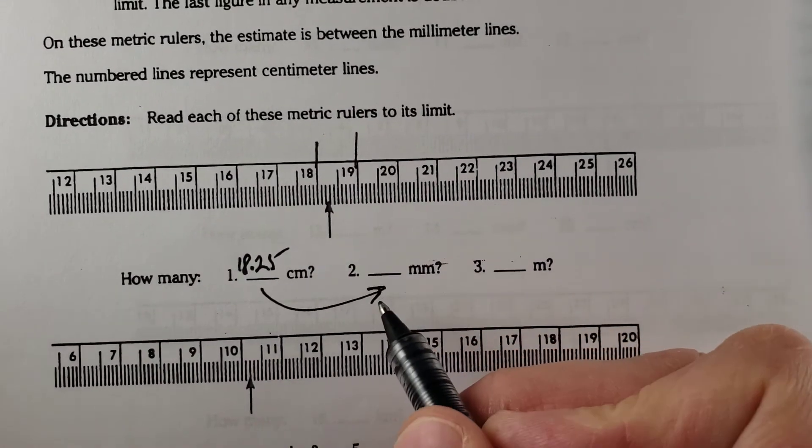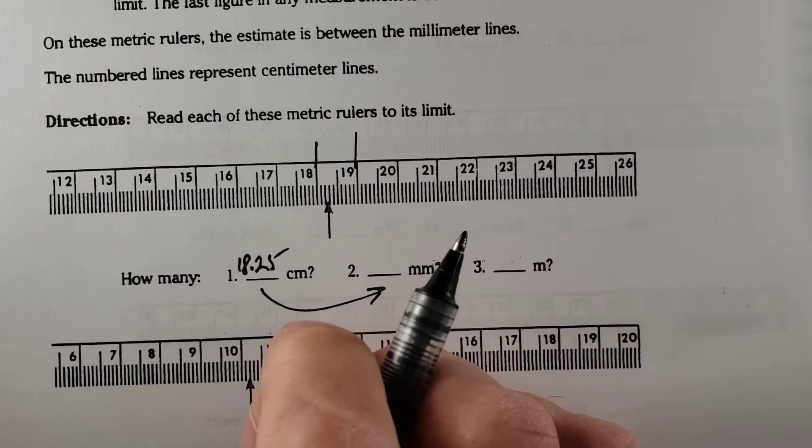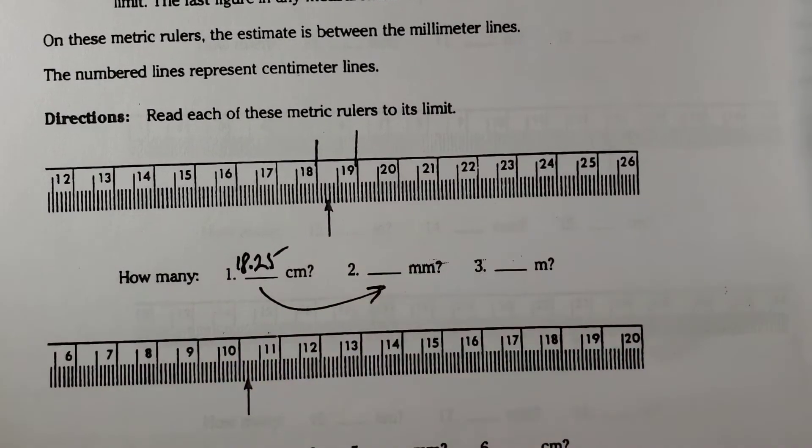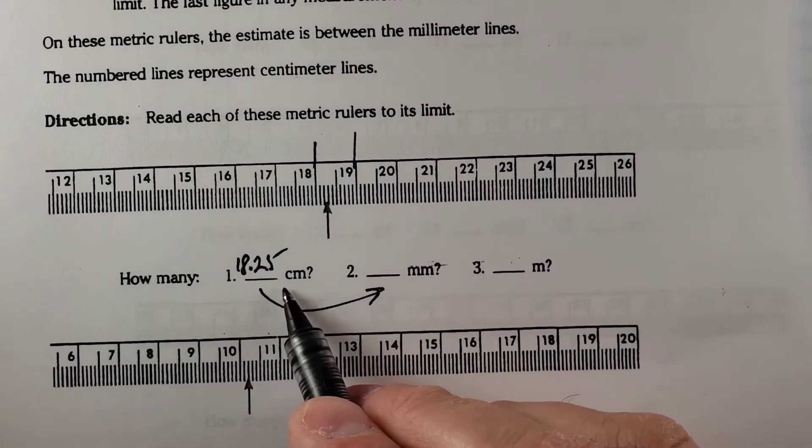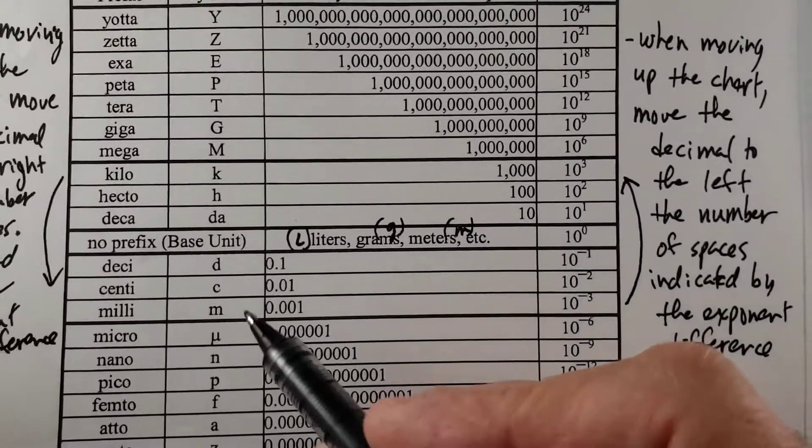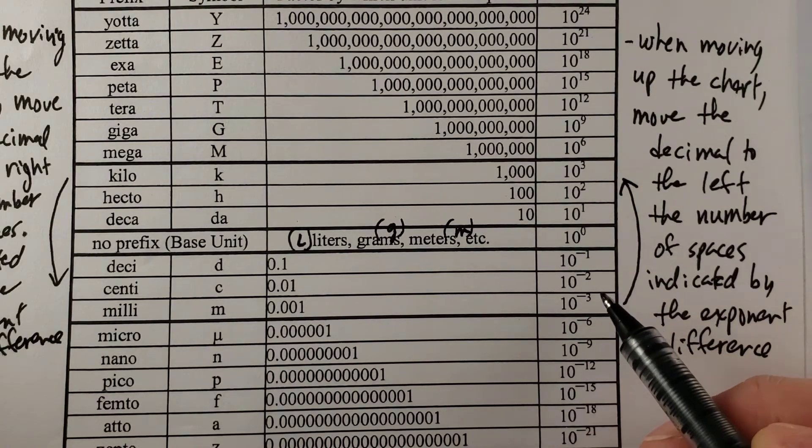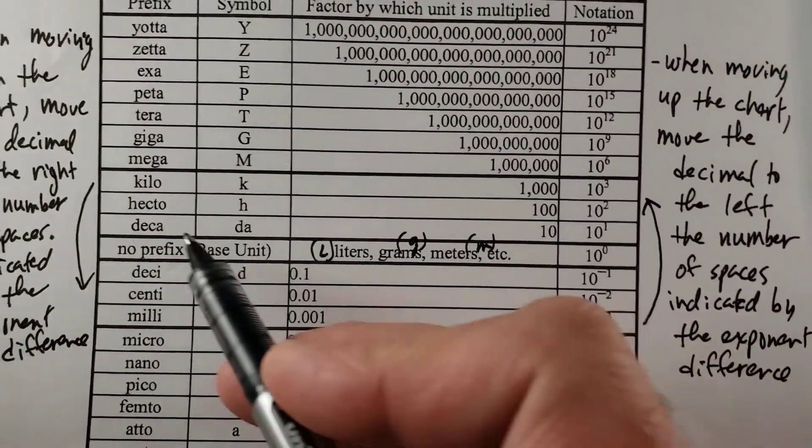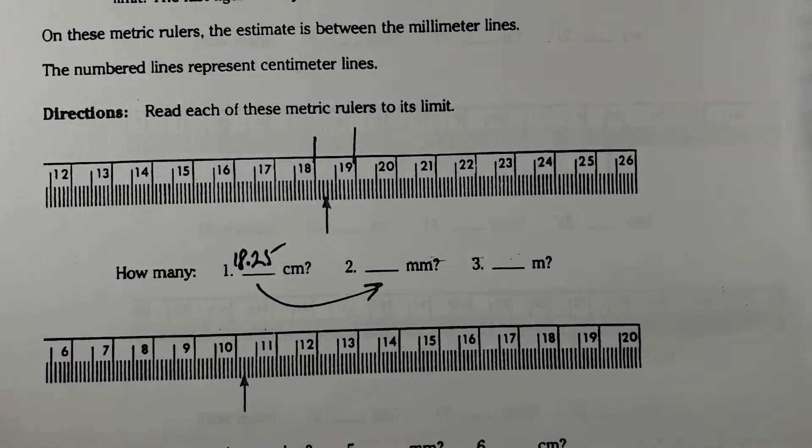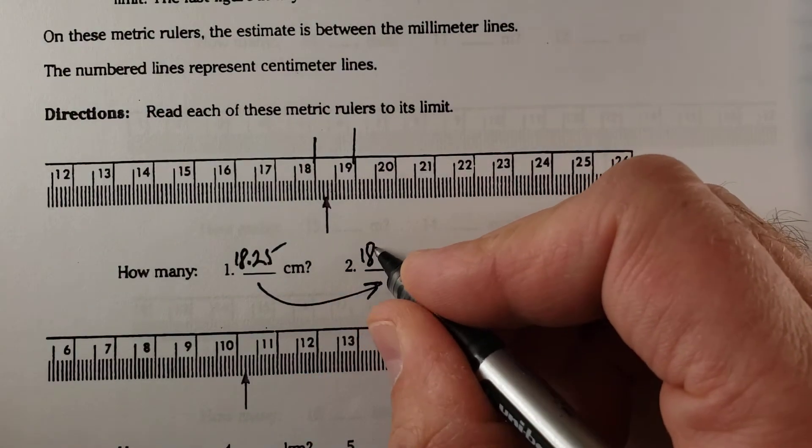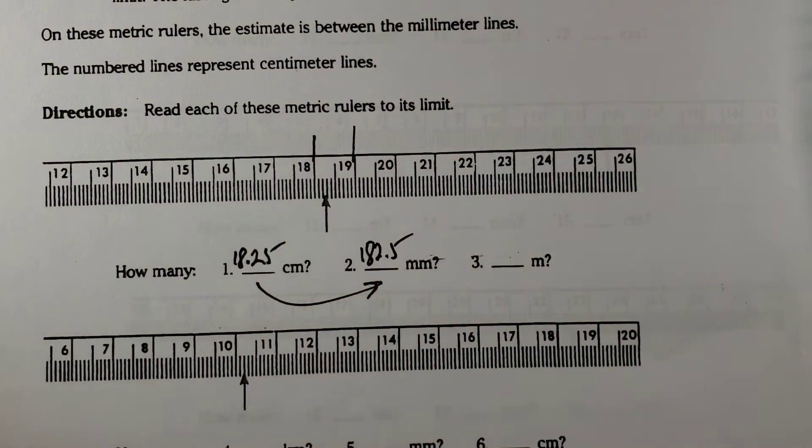When converting to millimeters, of course we use that conversion chart that we just did. So going from centi to milli, moving down the chart, a movement of one. So the decimal goes to the right by one. So 18.25 becomes 182.5 millimeters.